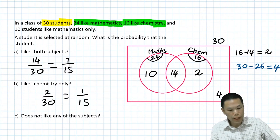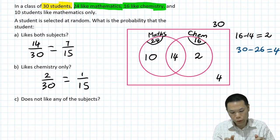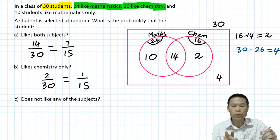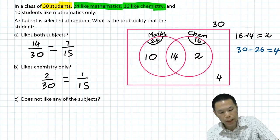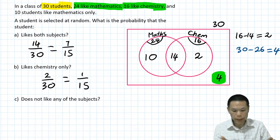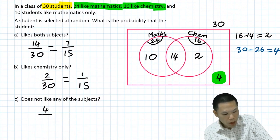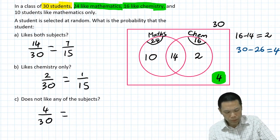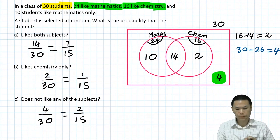Now the last one, Part C. What is the probability that the student does not like any of the subjects? That means outside of both circles — not Maths and not Chemistry — which is this region here. The probability is equal to 4 out of 30. We halve both of them, which gives us 2 out of 15.